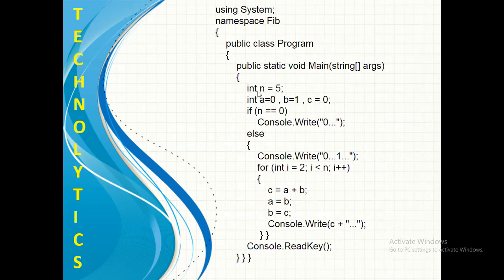Here inside main, we have created one variable with the name n and we have initialized it to the value 5. The reason is that this Fibonacci Series will generate 5 numbers. On the next line, we have created 3 variables, A, B and C.